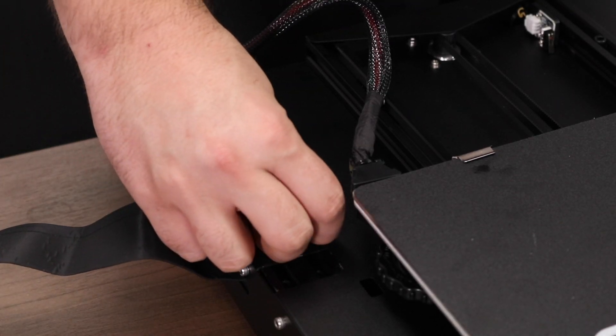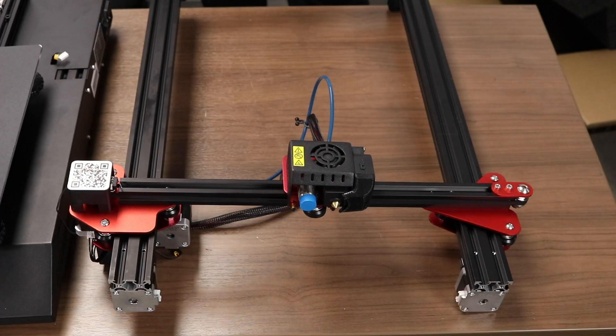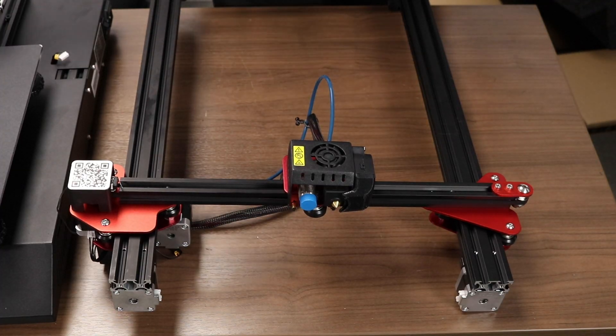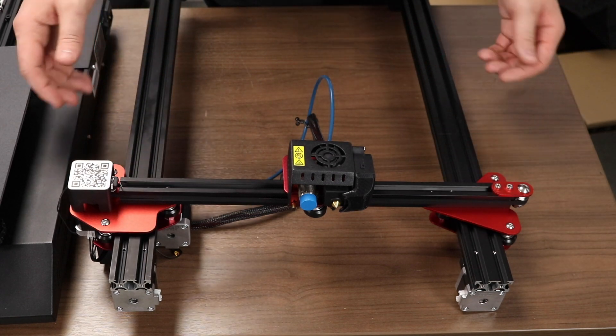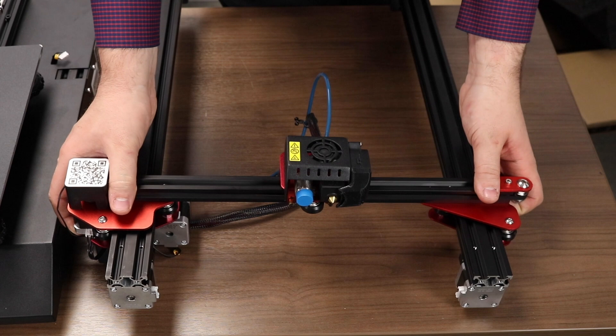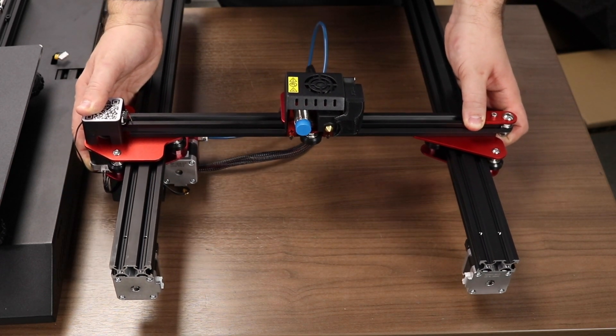Let's begin by removing the piece of tape holding the Z-axis motor wires in place. There's one on each side. Out of the box, the Z-axis comes with the X-axis gantry fairly low, and we want it higher. So, take your fingers and move the lead screws at the back of the gantry until the X-axis gantry is about halfway up the Z-axis.